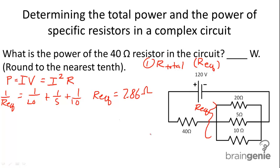So we're further simplifying this now. Now we know that this is 2.86 ohms, we can figure out the total resistance of the entire circuit. So our total is going to be equal to 40 ohms plus 2.86. We get 42.86 ohms as our total resistance.